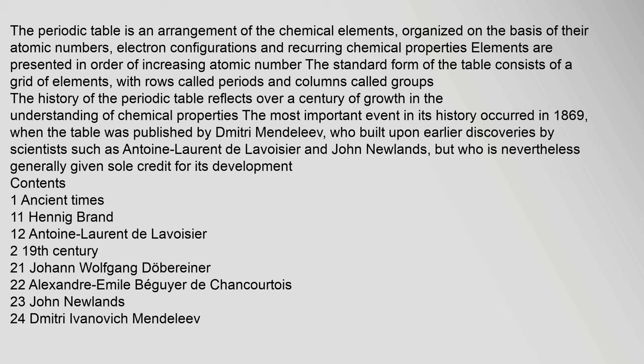The standard form of the table consists of a grid of elements, with rows called periods and columns called groups. The history of the periodic table reflects over a century of growth in the understanding of chemical properties. The most important event in its history occurred in 1869, when the table was published by Dmitry Mendeleev, who built upon earlier discoveries by scientists such as Antoine Laurent de Lavoisier and John Newlands.